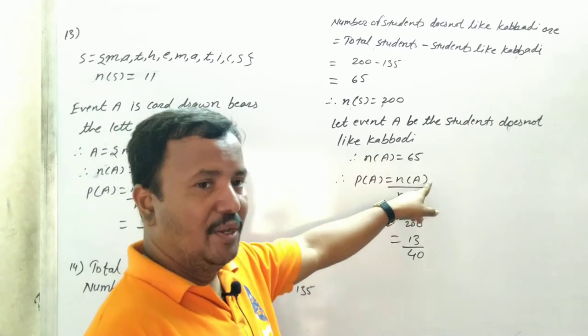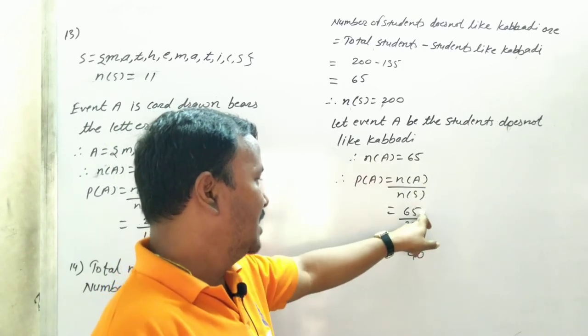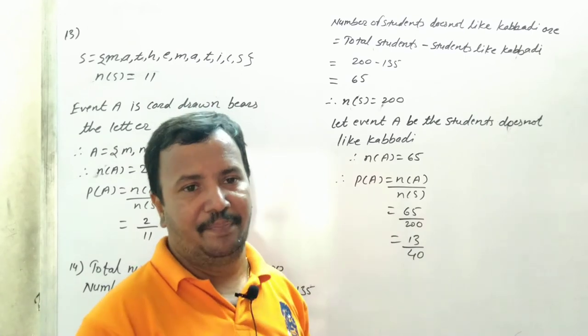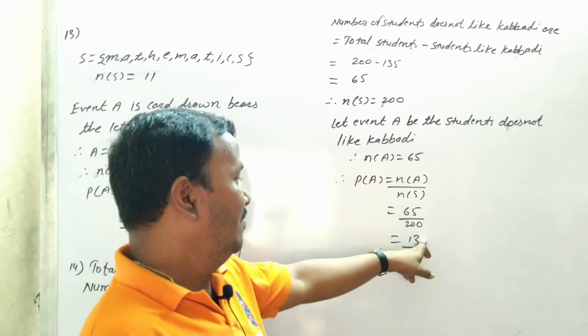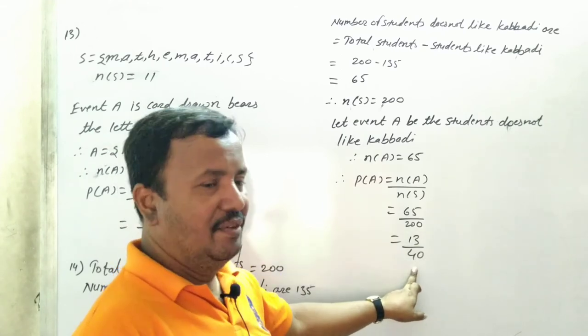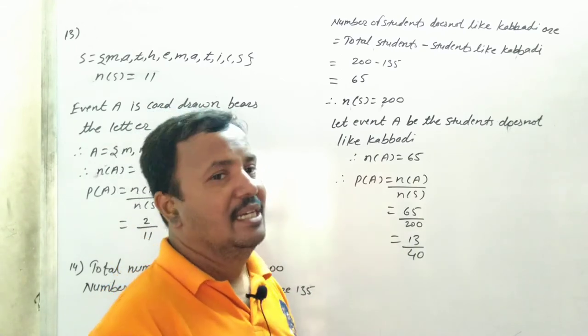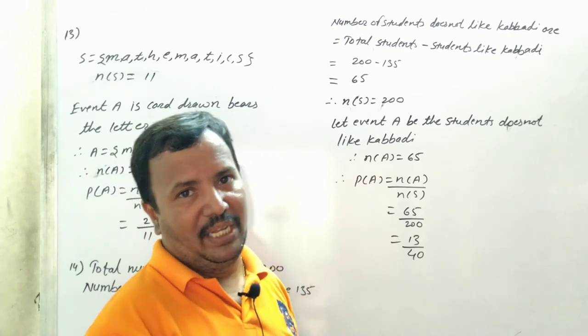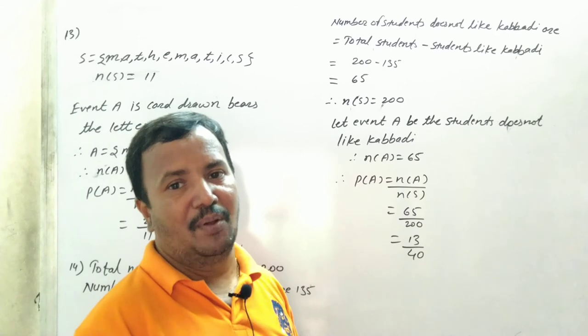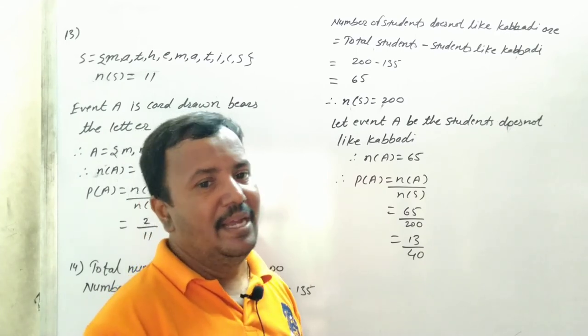Number of probability of A is equal to number of A upon number of S. Probability of A is equal to number of A upon number of S. That is 65 upon 200. What will happen? 65 upon 200. 13 fives are 65, 40 fives are 200. 5 से यापर डिवाइड किया? Then final answer is 13 divided by 40. What is the probability? 13 divided by 40.